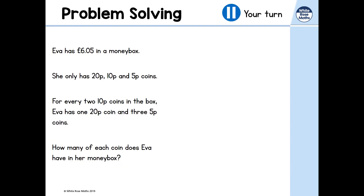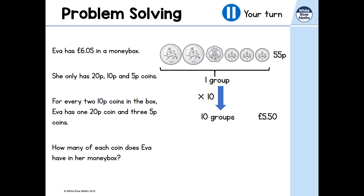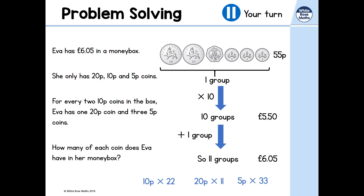Now you have a go. Eva has £6.50 in her money box. For every two 10p coins in the box, Eva has one 20p coin and three 5p coins. This is one group and it contains 55p. In ten groups that would be £5.50, so I need one more group to reach £6.50, giving eleven groups in total. That means 22 ten-pence coins, 11 twenty-pence coins, and 33 five-pence coins.